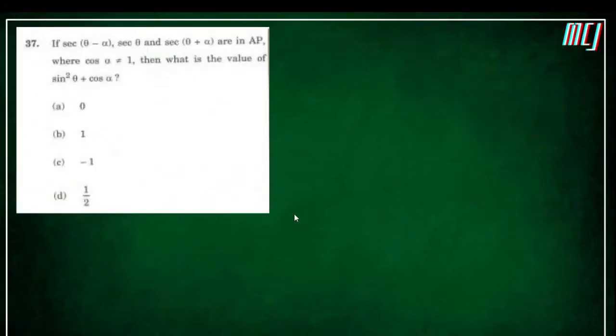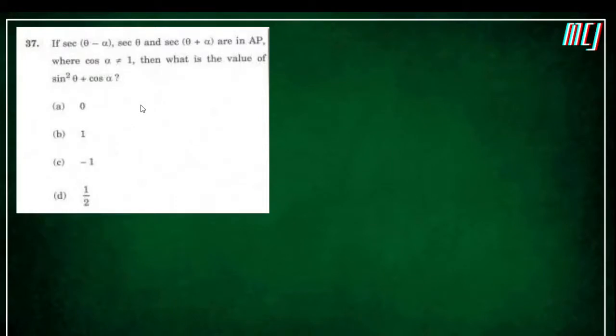The next question says: sec(θ − α), secθ, and sec(θ + α) are in AP. Since they are in AP, we can use the property of arithmetic progression.